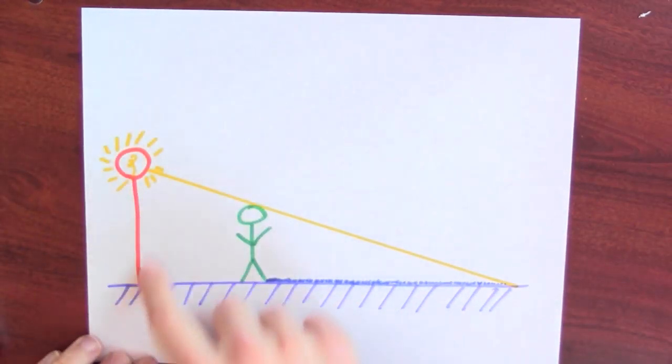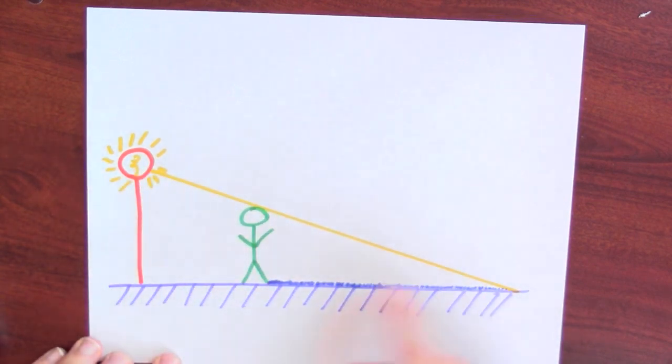Let's draw a picture to represent this person moving away from the light source. Here's my picture. I've got a light source right here, and I've got this person right here. And I imagine that person walking away from the light, and I've drawn in their shadow.